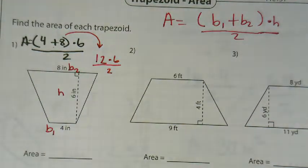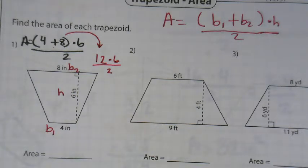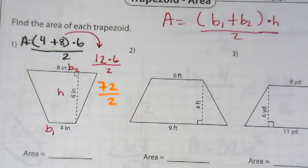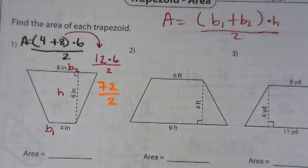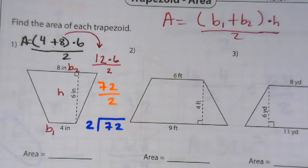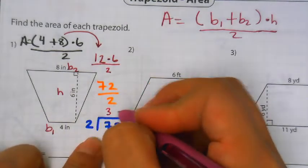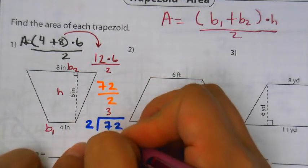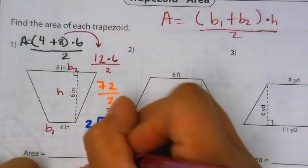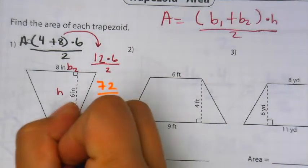Now you can do the shortcut or the long way. If you don't know the shortcut, you do 12 times 6, which gives you 72 divided by 2. Then you do long division: 2 goes into 7 three times, remainder 1, bring down the 2, 2 goes into 12 six times, remainder 0. My answer is 36 inches squared.